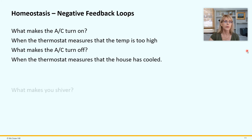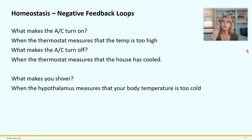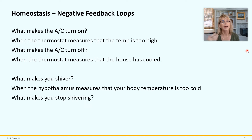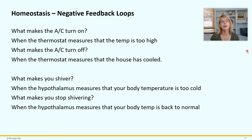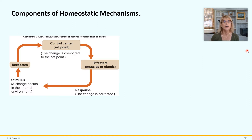Here's an example in humans: what makes you shiver? Your hypothalamus is measuring that your body temperature is too cold. When your body temperature is too cold, the hypothalamus makes you start to shiver. When you shiver, all of your muscles are contracting — muscle contraction generates heat. When that heat builds up and brings your body temperature back into the normal range, your hypothalamus senses that and turns off the shivering. It is not more complicated than that.